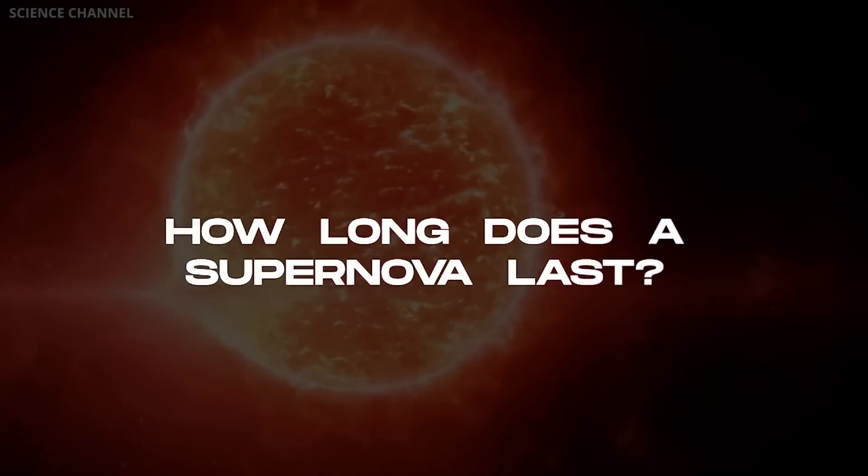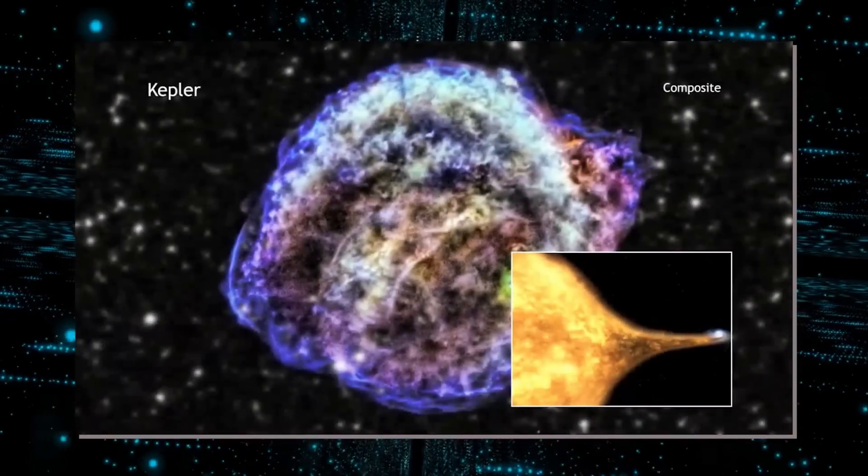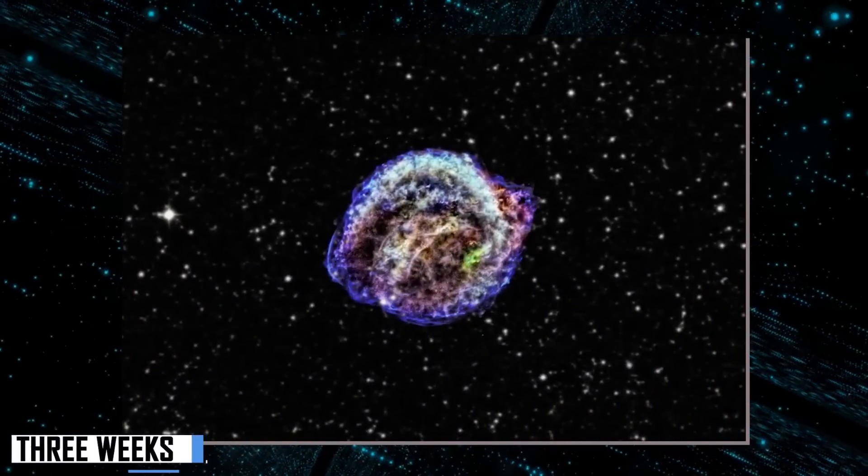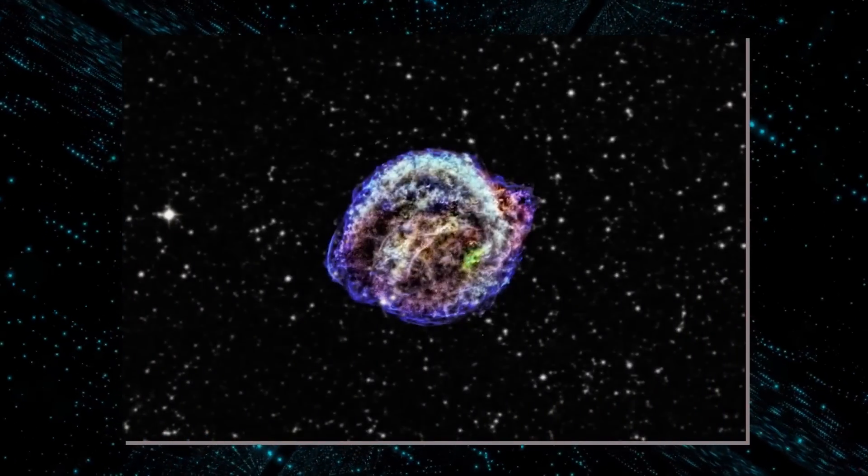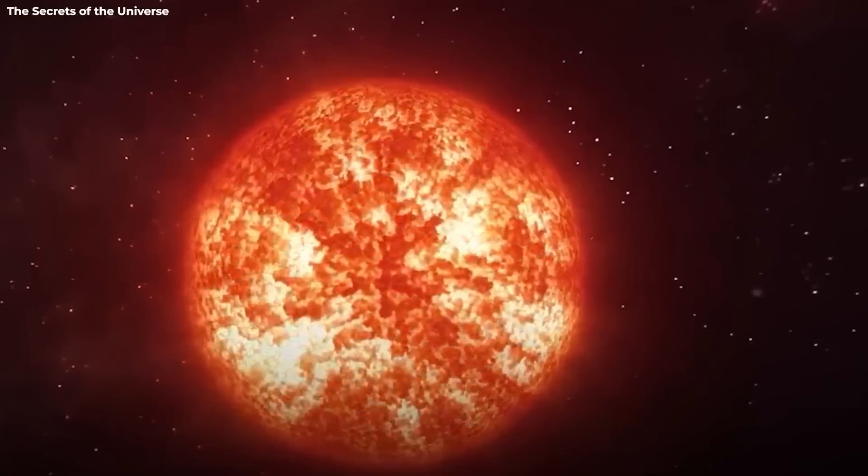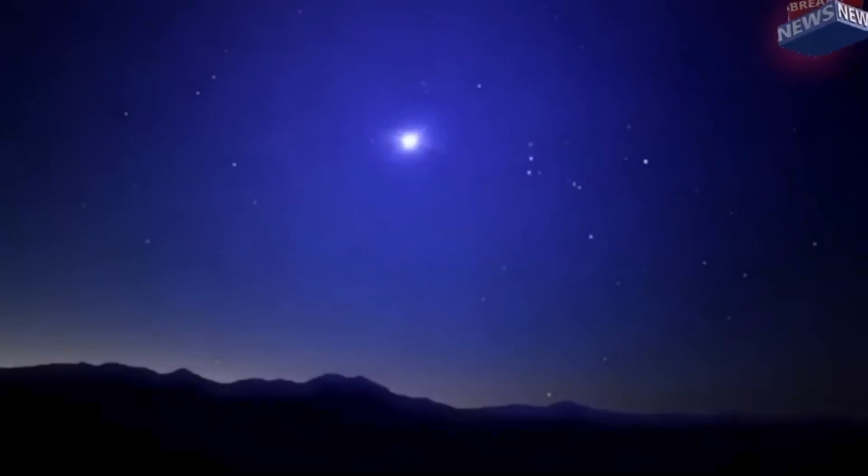But how long does a supernova last? Kepler's supernova was visible from the Earth for a period of three weeks. However, that was a much smaller star, and it would be much farther away from Earth. Since Betelgeuse is both larger and closer to the Earth, its supernova will likely be visible for months, if not years, after it happens.